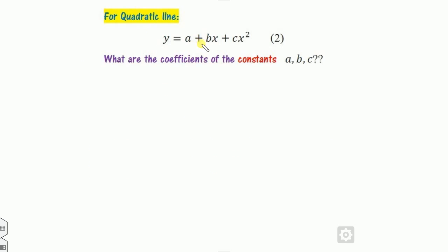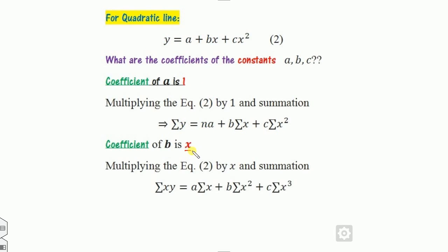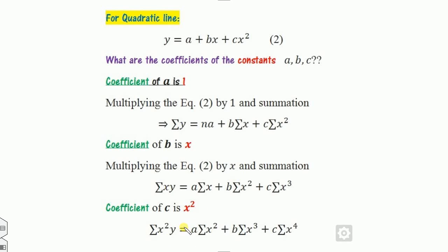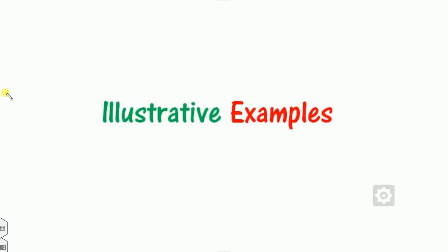Similarly for the quadratic, there are three constants — a, b, c. The coefficient of a is 1, so multiply this equation by 1 and put summation: Σy = na + bΣx + cΣx². Coefficient of b is x — multiply by x: Σxy = aΣx + bΣx² + cΣx³. Coefficient of c is x² — multiply by x²: Σx²y = aΣx² + bΣx³ + cΣx⁴. These are the normal equations of the quadratic curve. After solving you will get the values of a, b, c and substitute in the quadratic equation to get the trend equation.